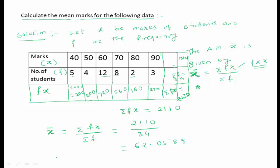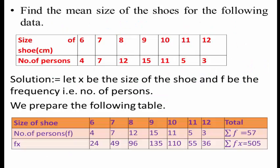Therefore, the mean marks is equal to 62.0588, approximately 62.06. In this way we calculate the arithmetic mean for grouped discrete data.